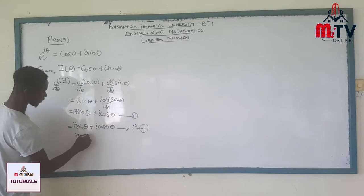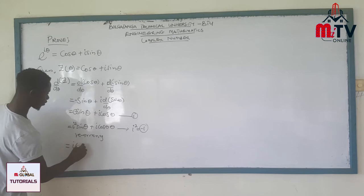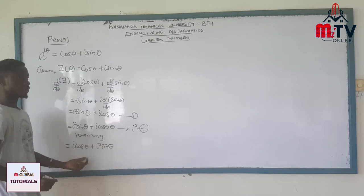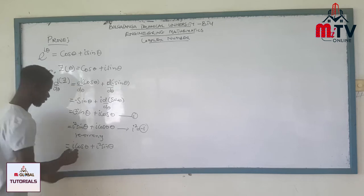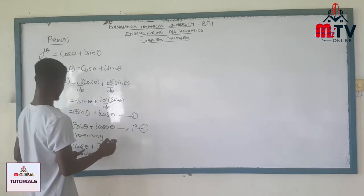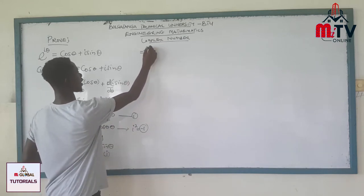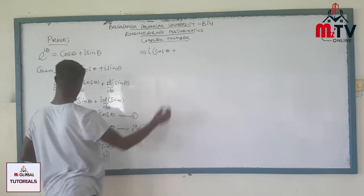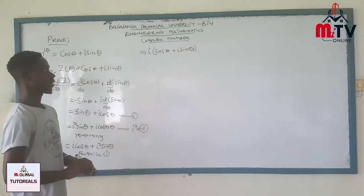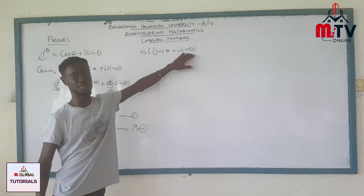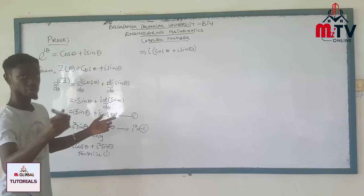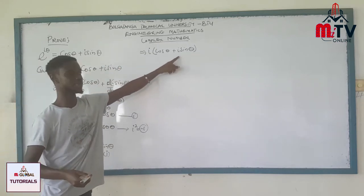Let's rearrange: i cos θ plus i² sine θ. Now we are going to factorize i out. When we factorize i, this becomes i times (cos θ plus i sine θ). We observe that cos θ plus i sine θ is exactly the same as our original z. So this equation relates back to z.